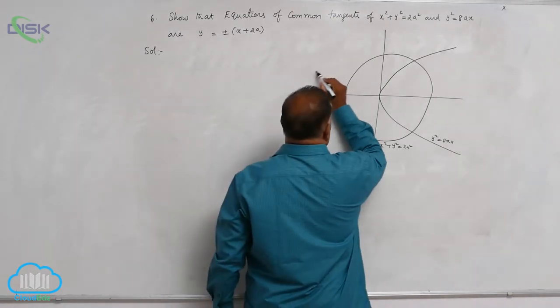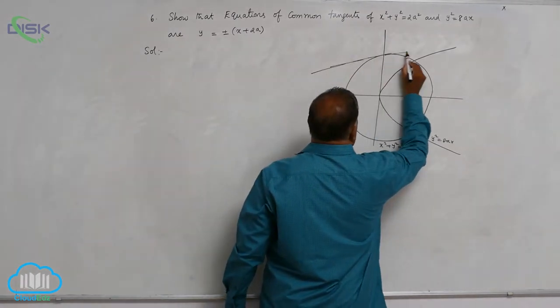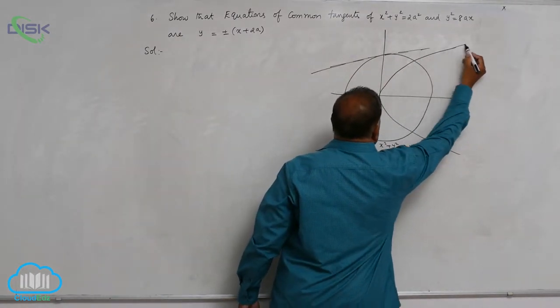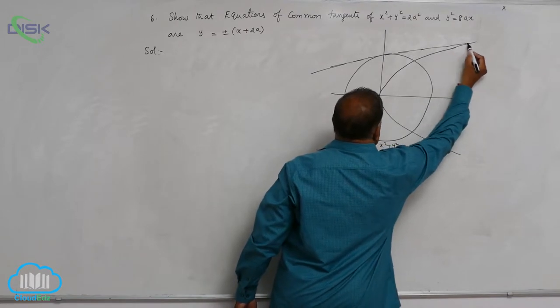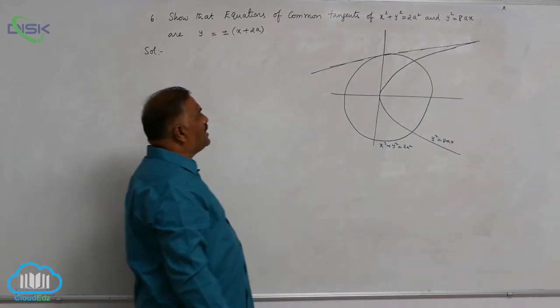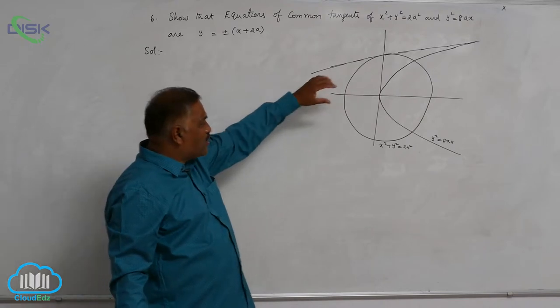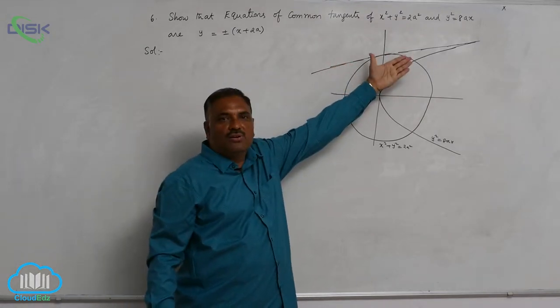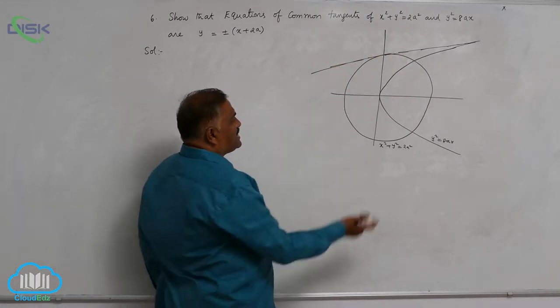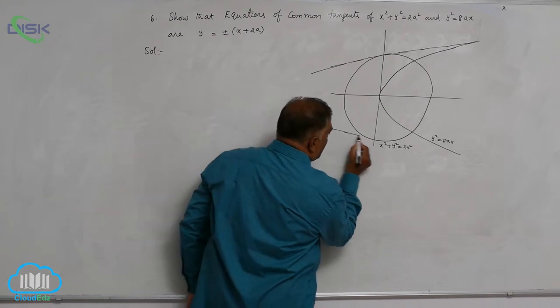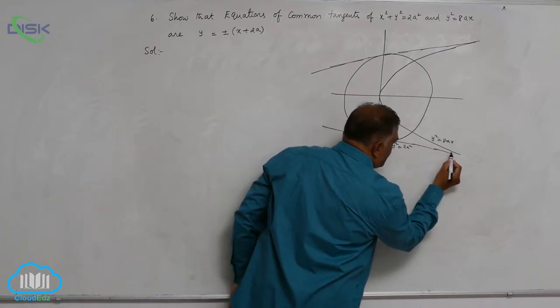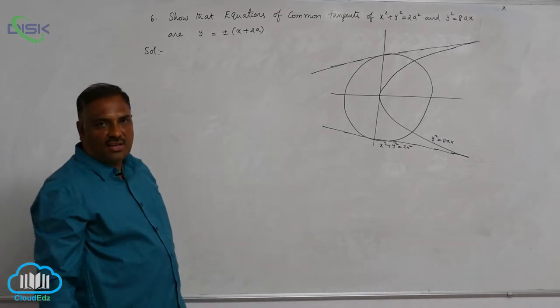Suppose you say that this is going to be a common tangent like this. If you extend the parabola, I think it may touch the parabola at some point. That means this line touches not only circle but also the parabola. In the same fashion, you can draw one more tangent like this also, so that it can touch the parabola and the circle.